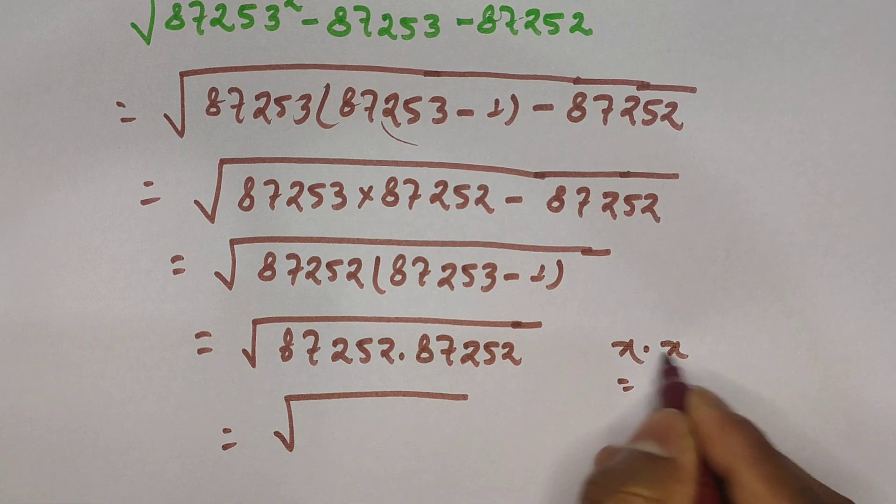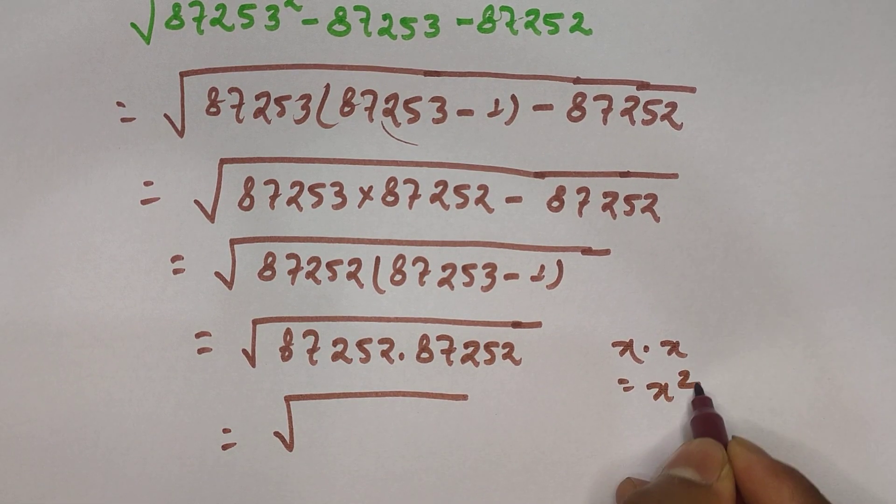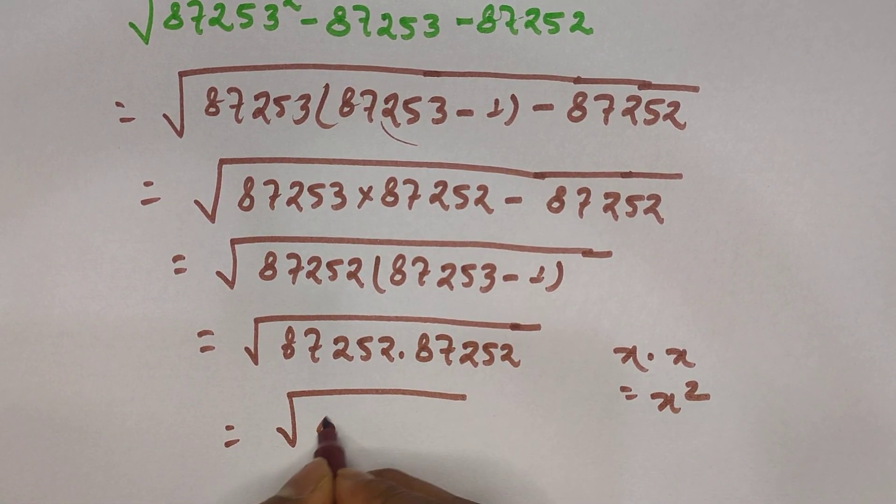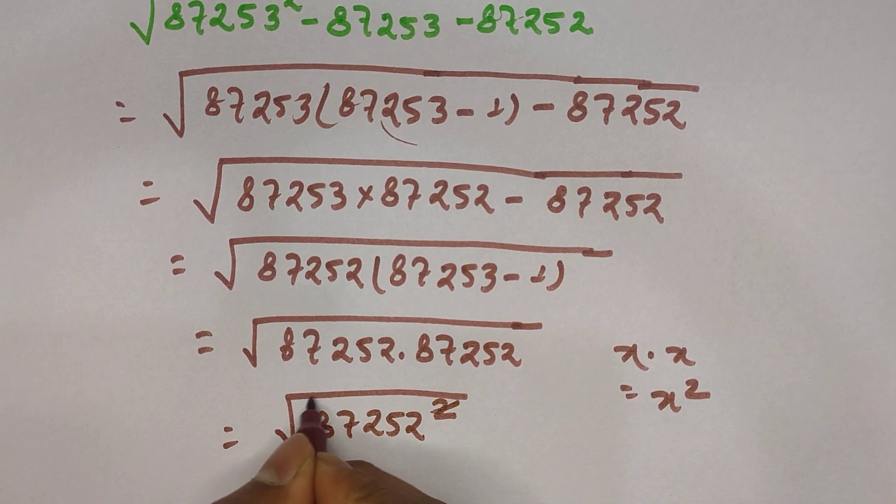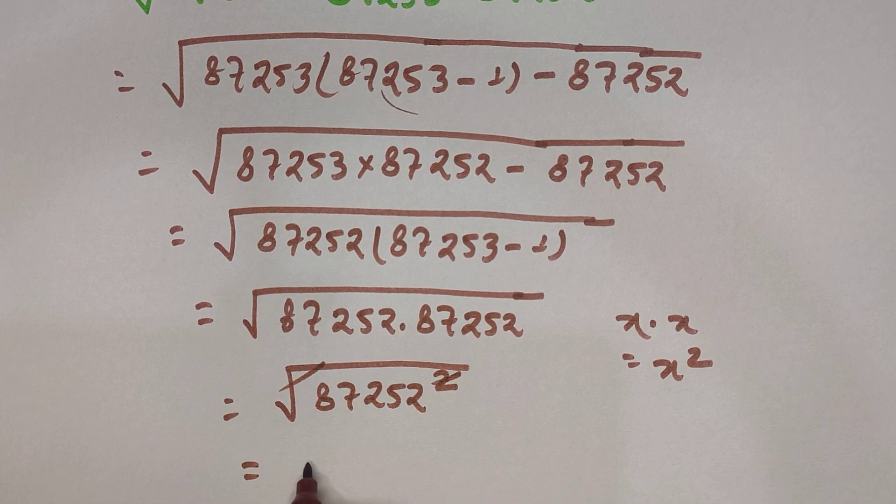to x times x. We can write x times x as x power 2. So again, we are going to write this as 87252 power 2. And this two and this square root will be cancelled, so our final answer